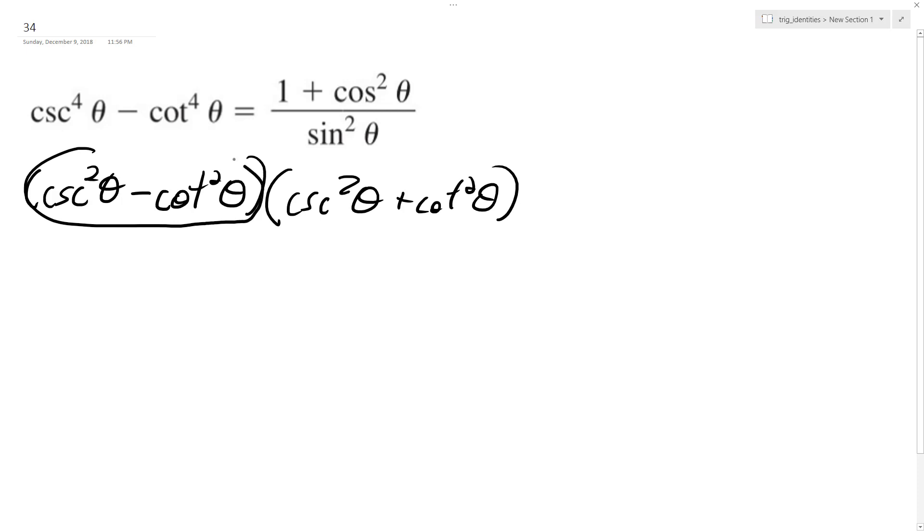And this right here is actually equal to 1. It's a trig identity. Just take my word for it. And we still have cosecant squared theta plus cotangent squared theta.